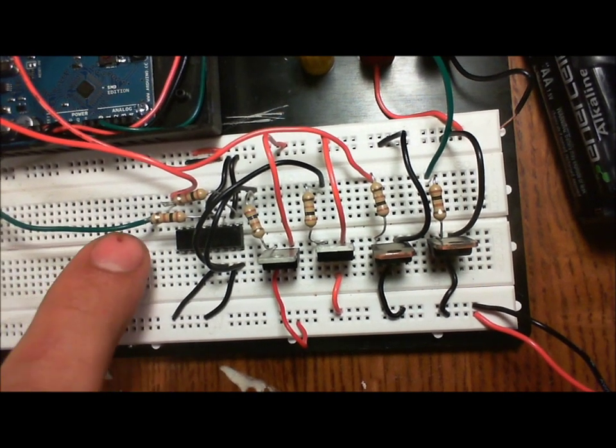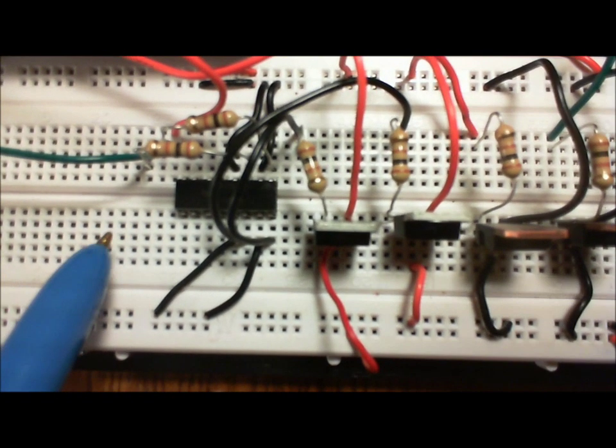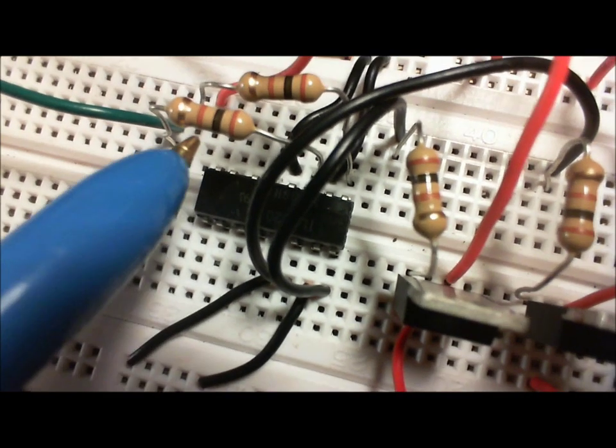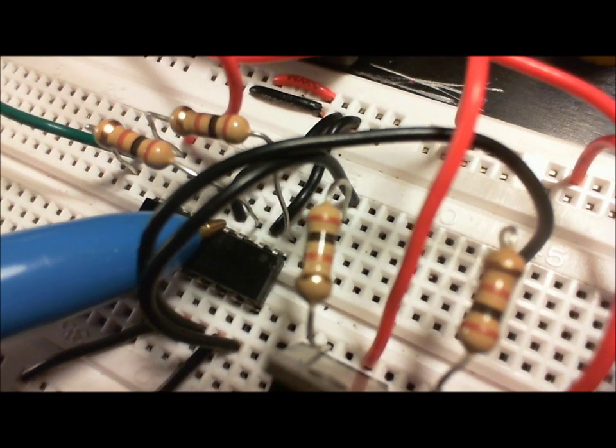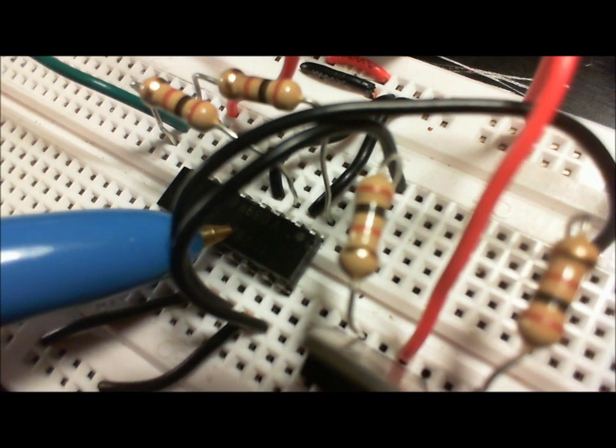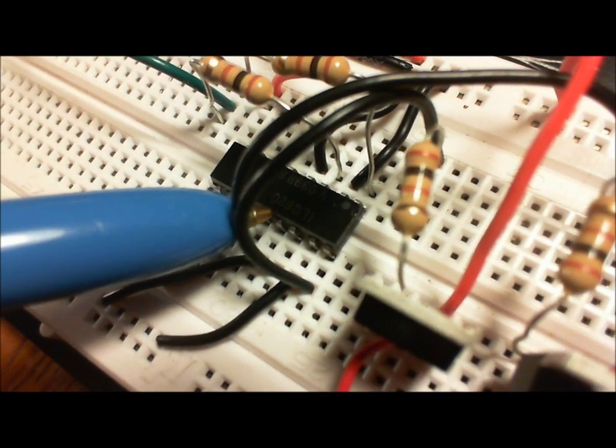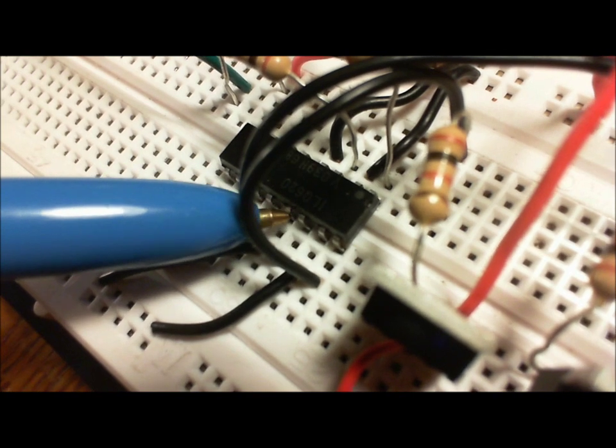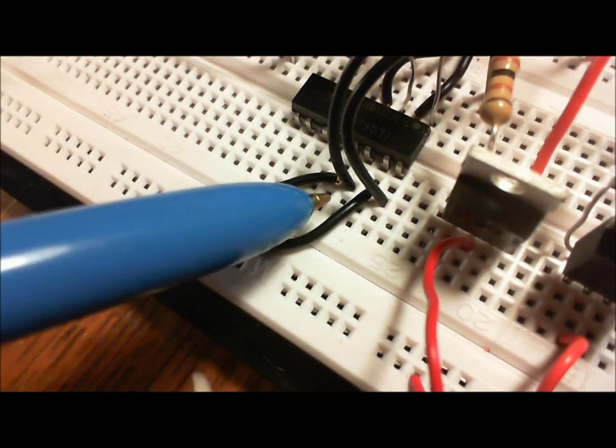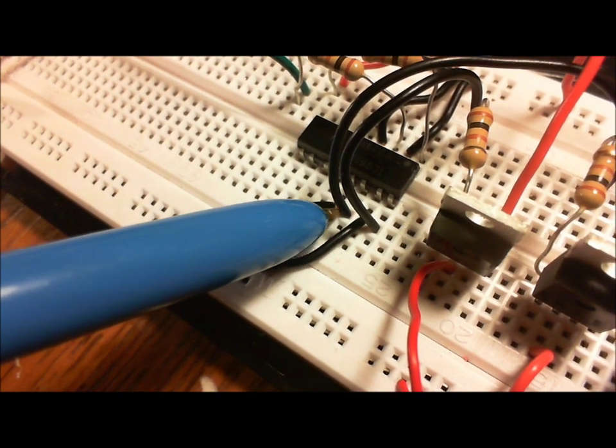One signal is coming in here, and it's going through this resistor. And this is an optical isolator. It's really cool. It's basically, you send enough juice, see it has a ground here as well, into these two pins or across them to turn on a little LED inside. The little LED flashes over here and decreases the resistance between these two pins on the other side. So it's like a switch.